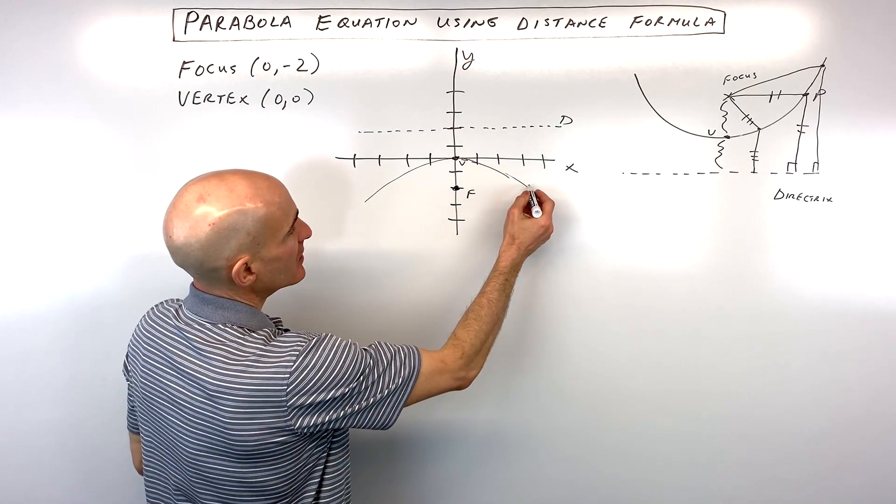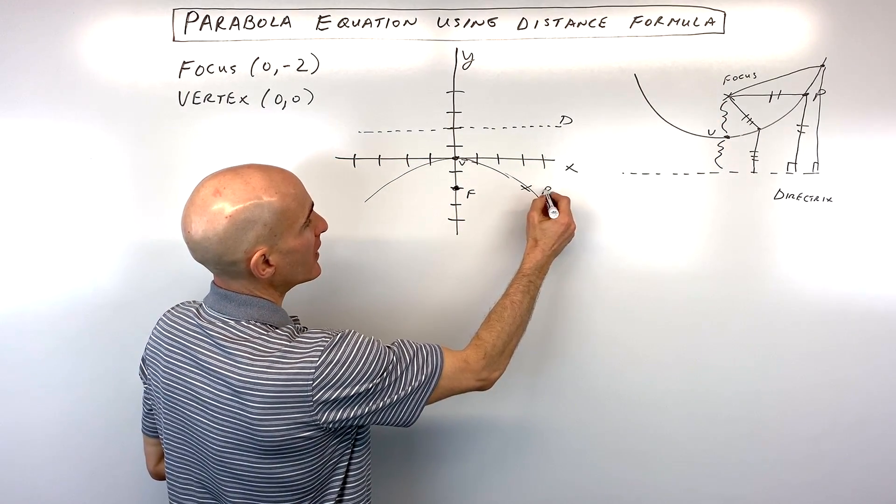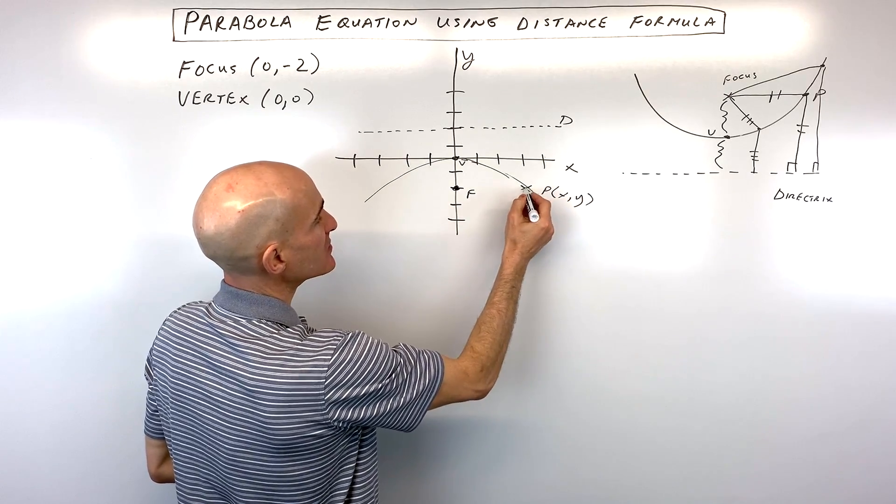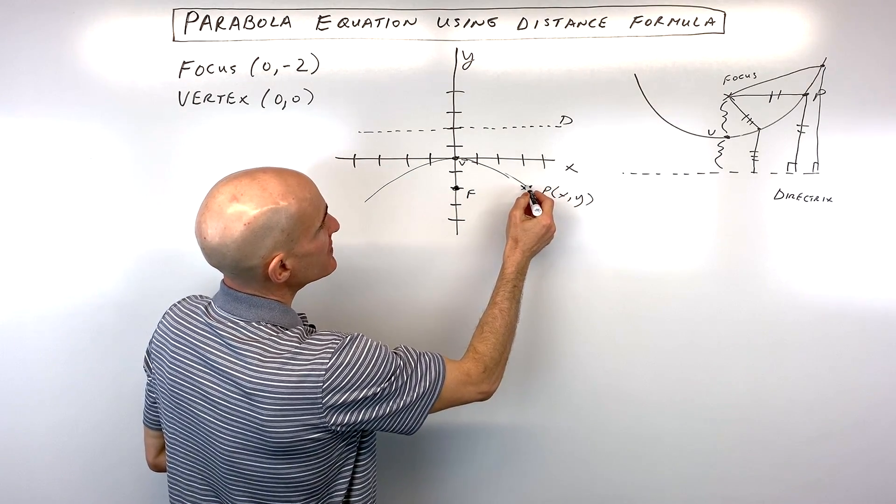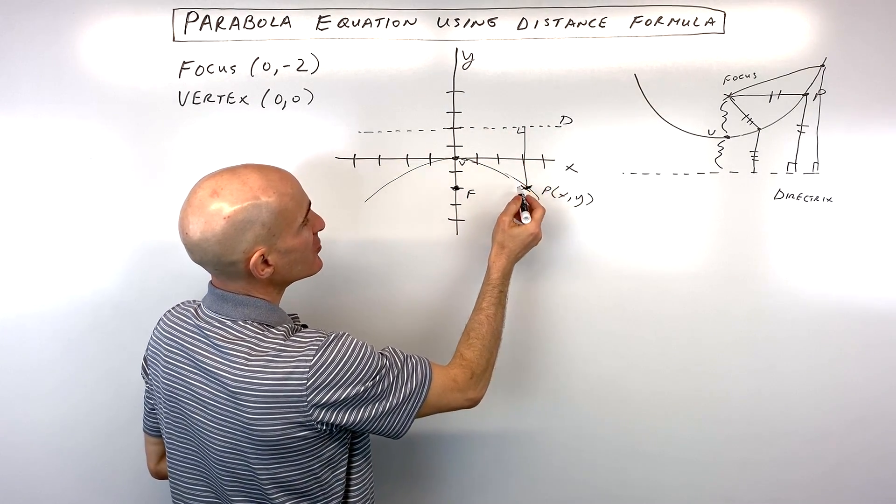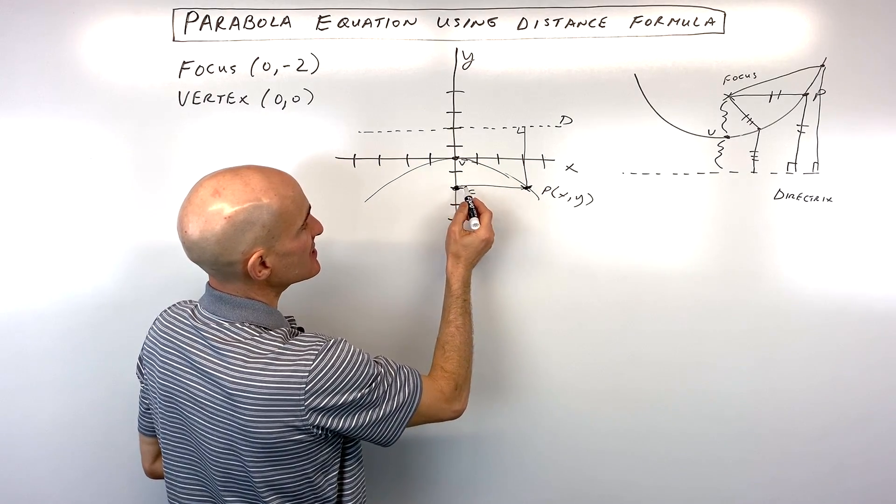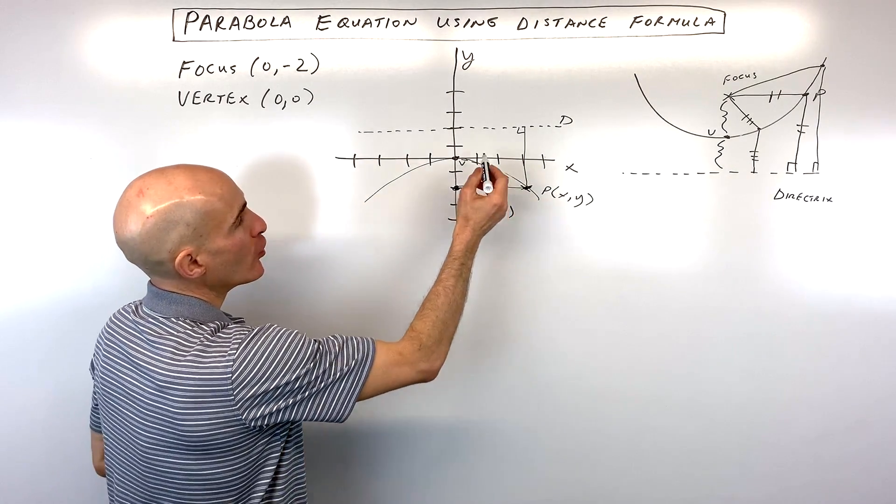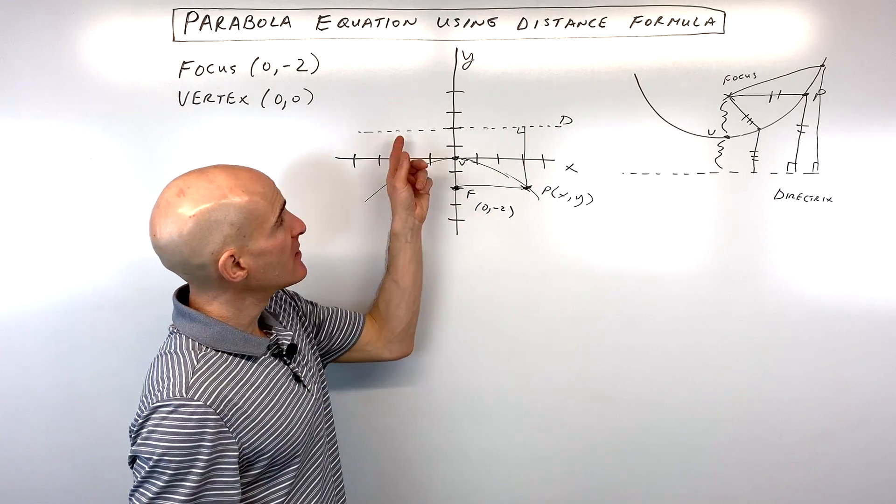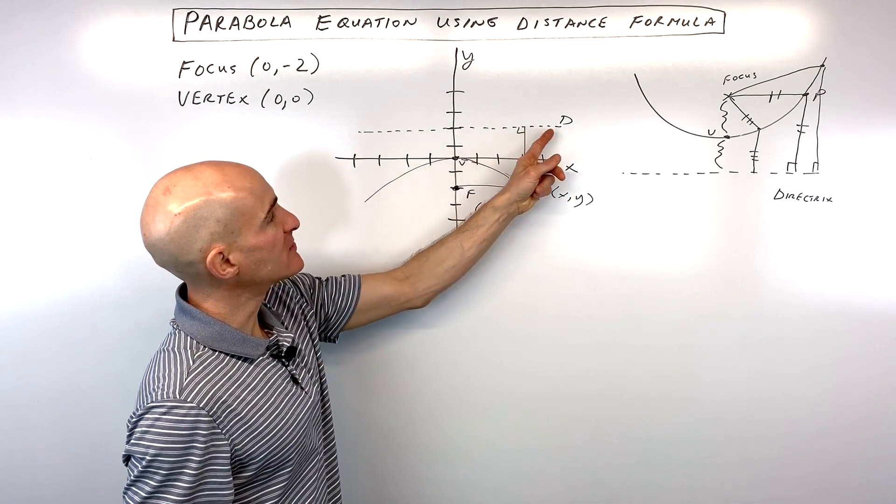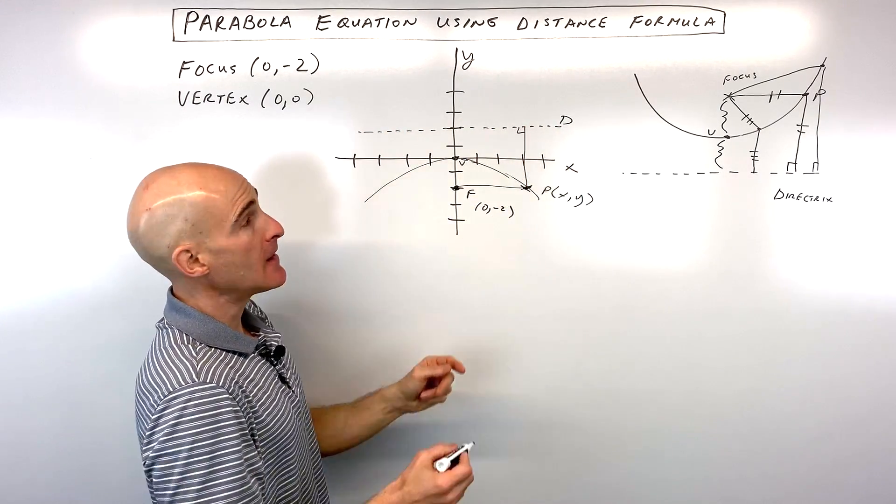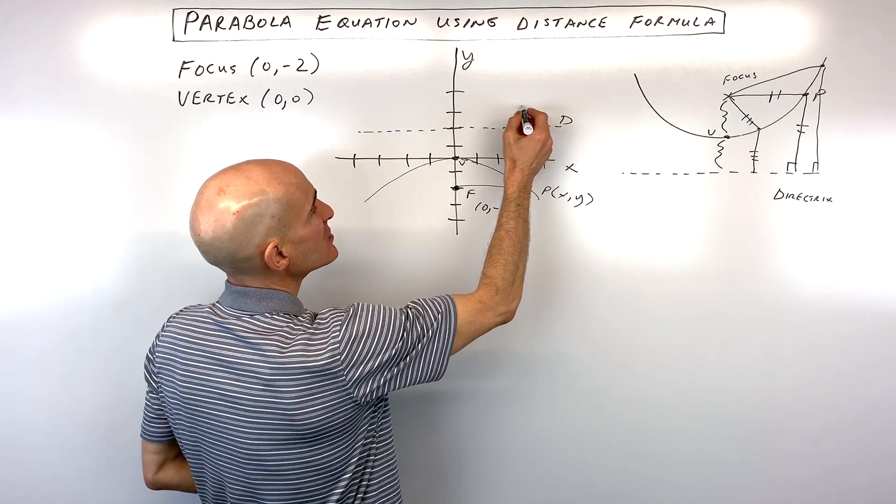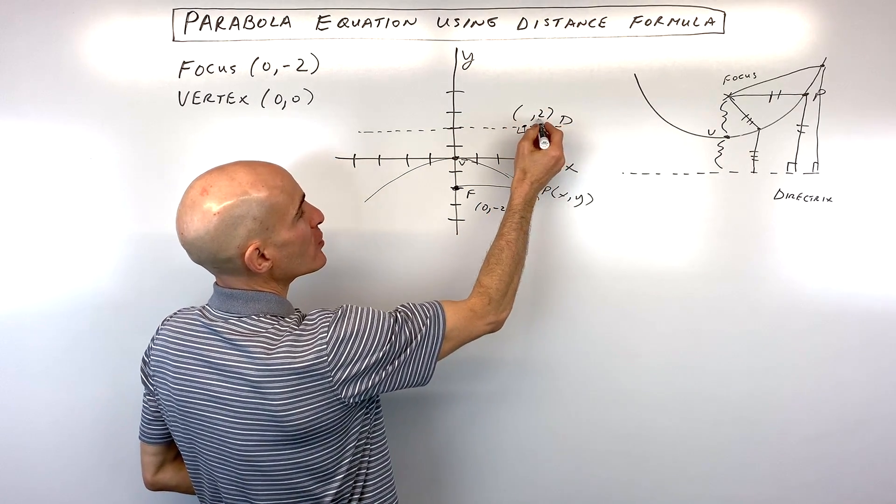And if I pick a point, let's just pick a random point here. Let's just call this point (x, y), this point right here. And we know that this perpendicular distance to the directrix has to be the same as this distance to the focus. Now notice that when you're on this directrix, the y-coordinate is always fixed at this height of 2.